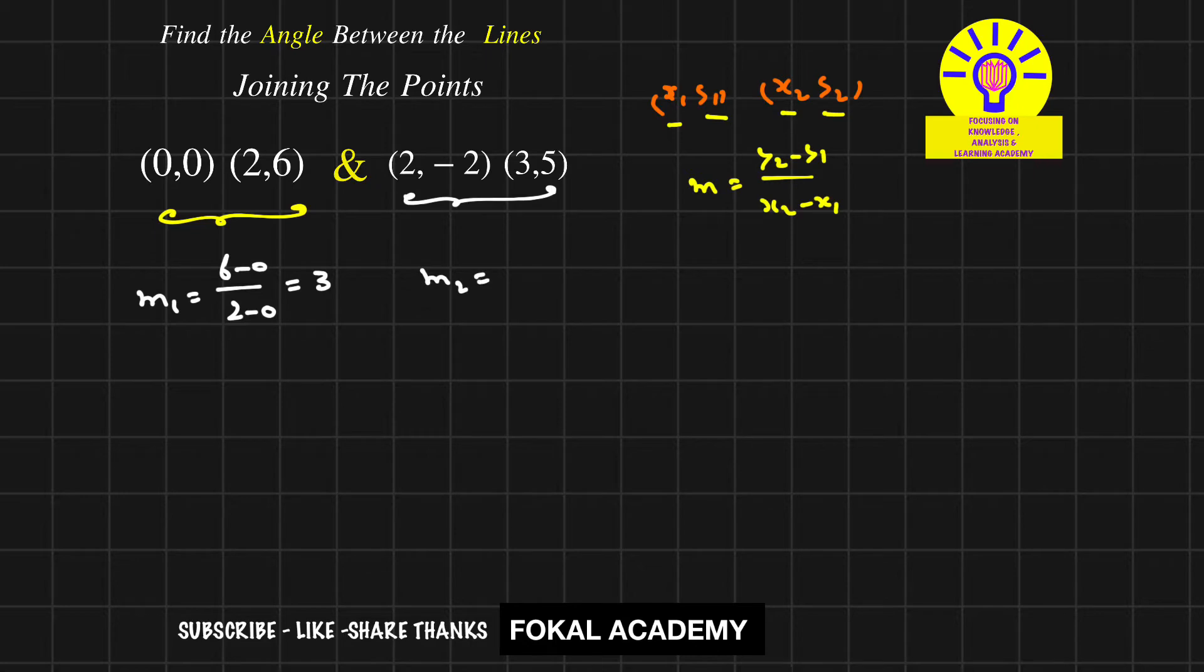That is m2 = (5 - (-2))/(3 - 2) = (5 + 2)/1 = 7. So 7 is the slope for the second line and 3 is the slope for the first line. But here we want the angle between the two lines.